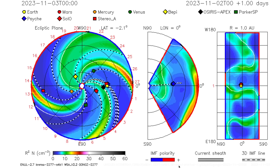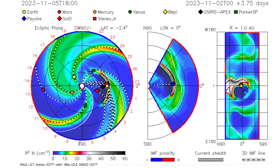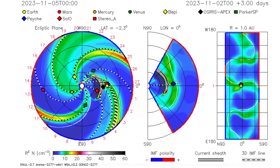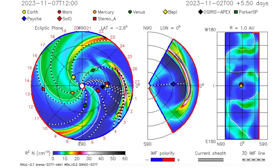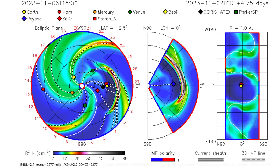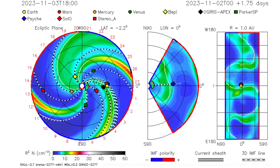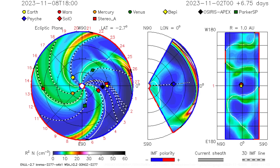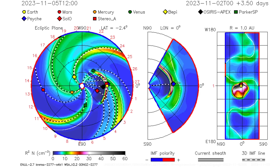This CME is expected to arrive Sunday night and should produce minor to moderate geomagnetic unrest. This model is from NASA. NOAA has one as well, but it doesn't include the far right panel.